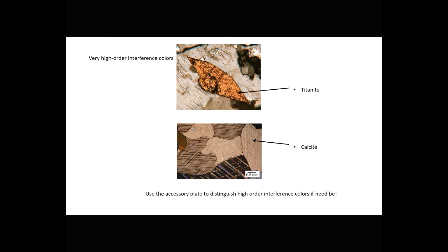If we're confused about whether interference colors are very, very high, washed out pastels, or are white, we can insert the accessory plate. Because when we insert the accessory plate, we add retardation. And if the minerals already have great retardation, interference colors will not change when we put in the accessory plate. But if we're looking at something with white or gray interference colors, and we put in the accessory plate, the colors will change to higher order.